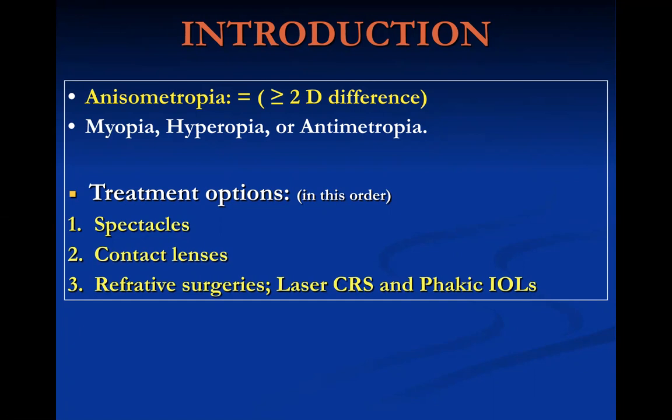The amount of difference is not the guiding factor. The response to fully correcting glasses and patching is the key to deciding whether to change the plan and go for refractive surgery. If a child has a difference greater than two — or even more than four diopters — but shows no amblyopia and is improving with glasses and patching, we should continue that line. The treatment options in order are: first, spectacles; second, contact lenses; and third, refractive surgeries including laser corneal refractive surgery and phakic IOL.